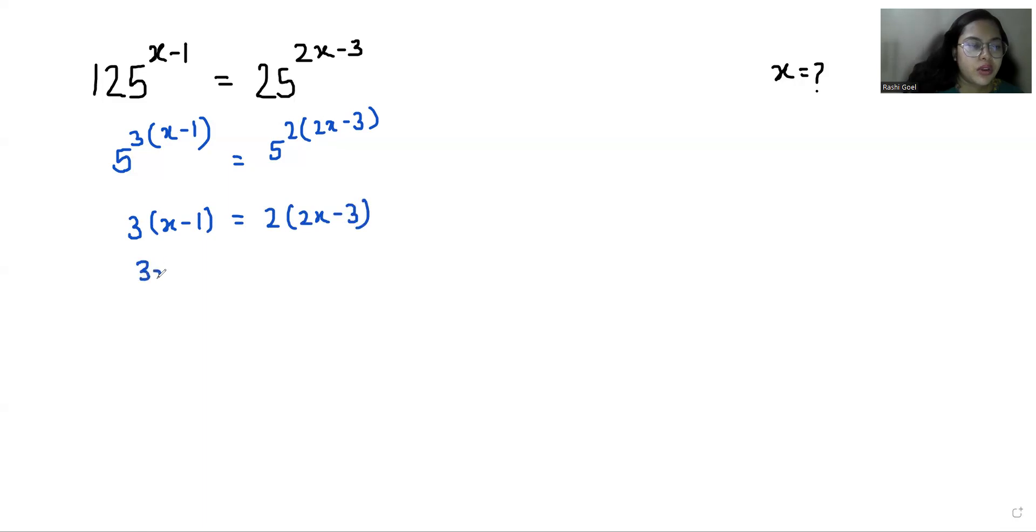Now if you multiply, 3 times x minus 1 equals 2 times 2x minus 3, so 3x minus 3 equals 4x minus 6. So 3x minus 4x equals minus 6 plus 3. So negative x equals negative 3, so x equals 3. The value of x is 3 in this case.